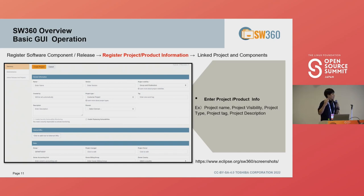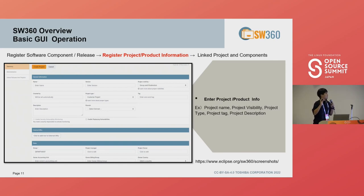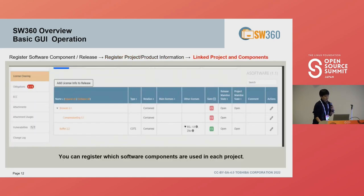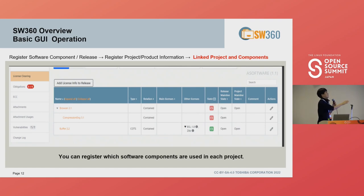After you register your component, you can register the project or product information, such as project name, version, and description. This operation is similar to registering your SBOM information. After setting project and component information, you can link them. This is an example where a project uses three components.